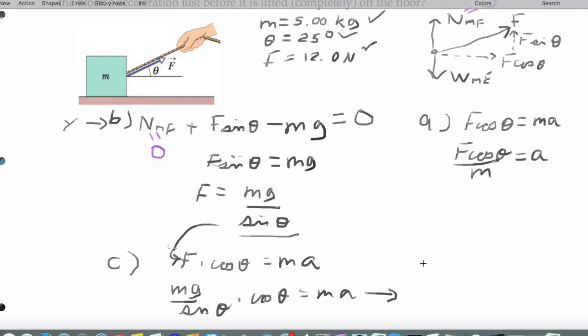When I simplify all of this, I'm actually going to end up getting that A is G times the cotangent of theta.